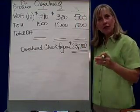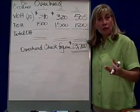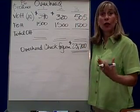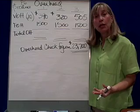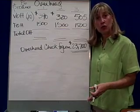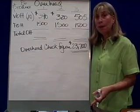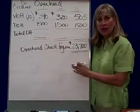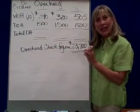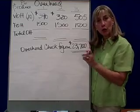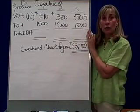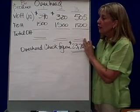Fixed overhead costs are fixed regardless of how many units you produce and sell. The problem tells us that fixed overhead for each quarter is $1,500.